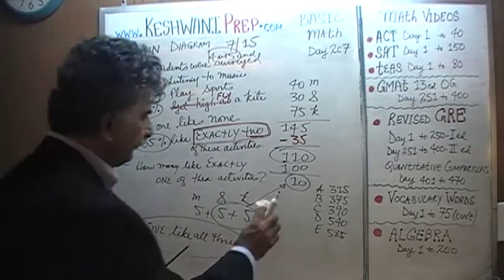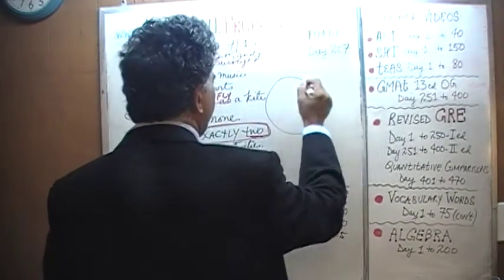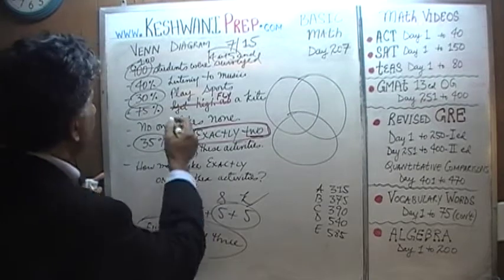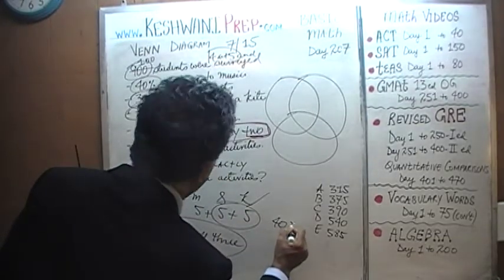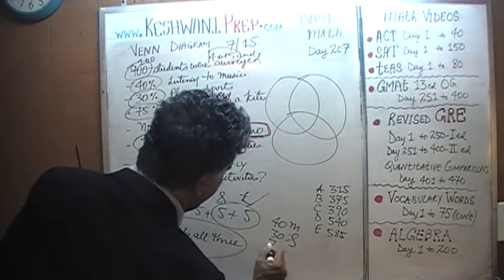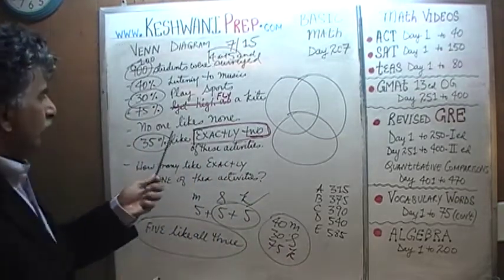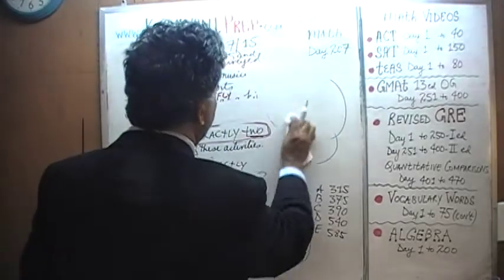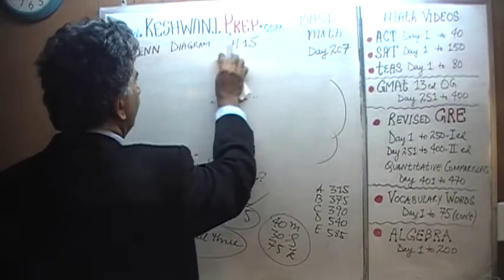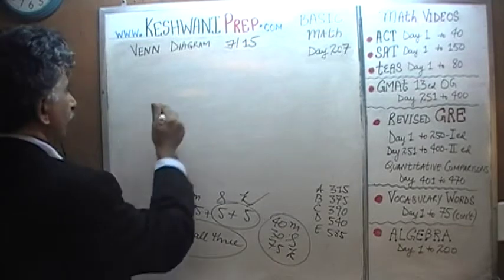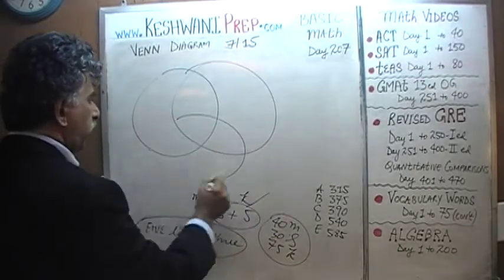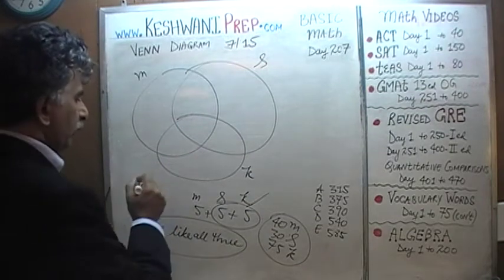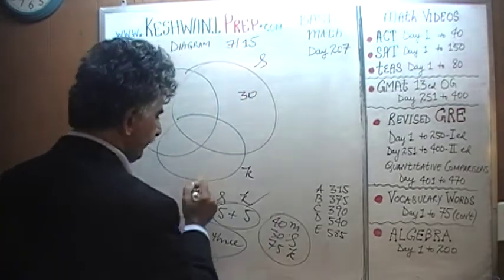Let's do a Venn diagram now. I'll erase to make room. We have 40 for music, 30 for sports, and 75 for kite. No one likes none — everybody is engaging in at least one activity. 35 of them like exactly two activities.